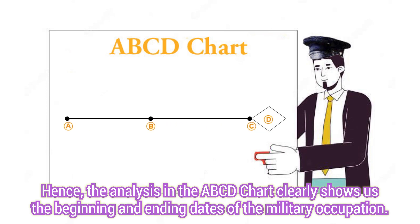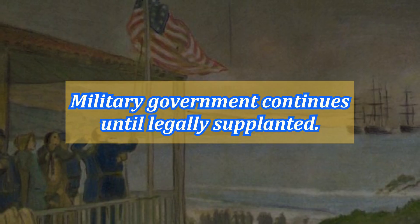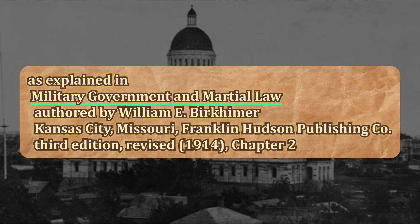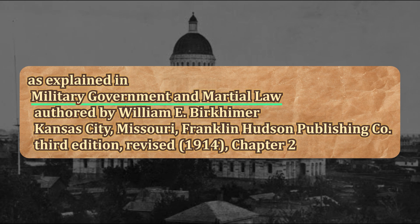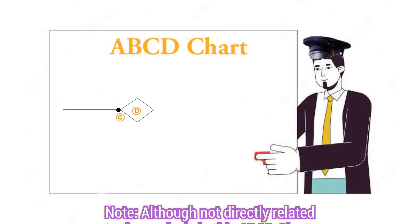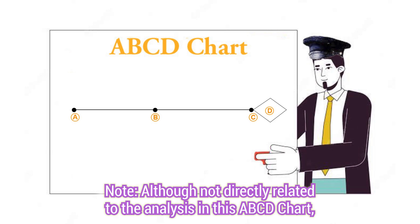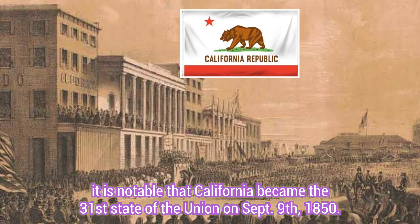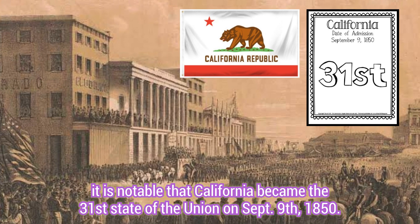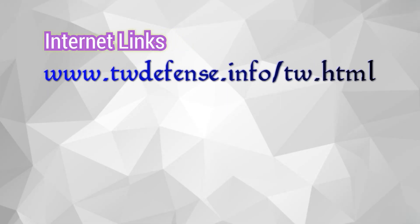The analysis in the ABCD chart clearly shows us the beginning and ending dates of the military occupation. Note: although not directly related to the analysis in this ABCD chart, it is notable that California became the 31st state of the union on September 9, 1850.